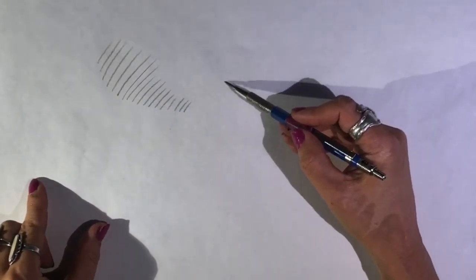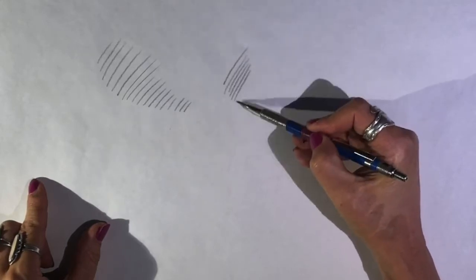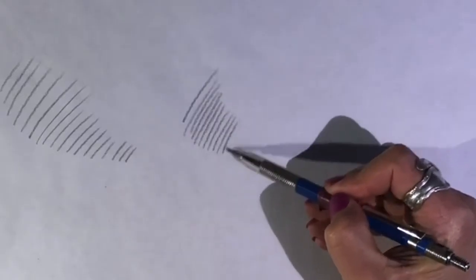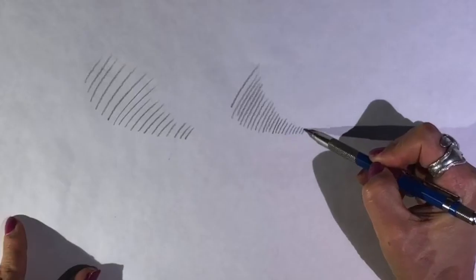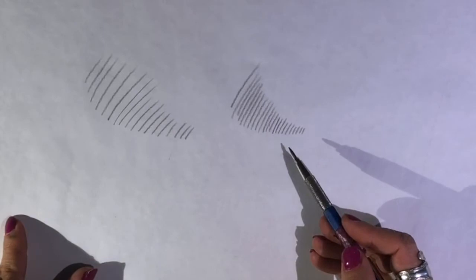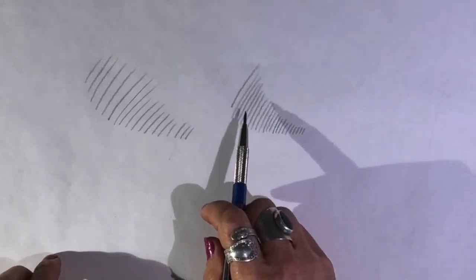Now I want you to make another set spaced a little bit closer together. I'm trying to do even pressure here but my pressure is varying. You should also have a very sharp pencil. My pencil is not quite as sharp as I would like it. You can see that it's a little blurry so you want to sharpen your pencil.